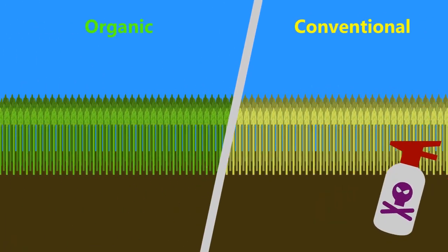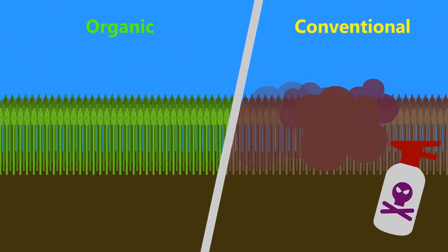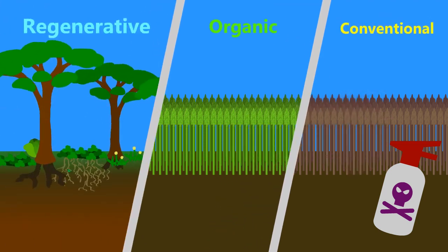Even organic agriculture, while not as bad, still does more harm than good. Regenerative agriculture is a way to reverse this trend to actually make a positive impact on the land.